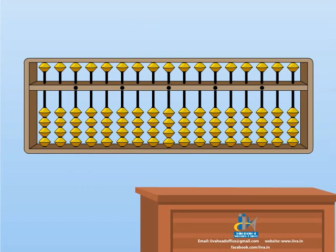Whenever we start counting, we will start from the center rod. Whenever a bead touches the value bar, it attains value. Here, this is 1. Now, this is 2. When 3 beads touch the value bar, this is 3. This is 4. When we bring the upper bead down, it has value 5. Now, this is 5.